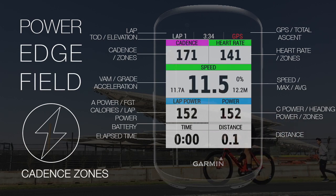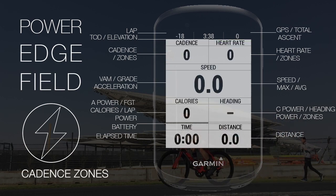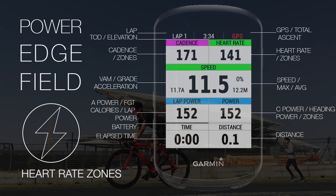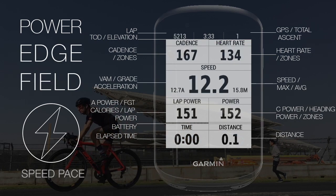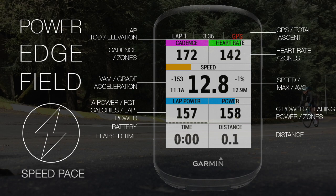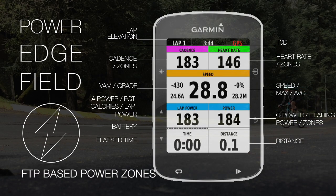Cadence uses zones based on professional standards. Heart rate uses zones based on your profile. Speed uses color zones for maintaining the pace. Power uses zones based on the anti-carbon or Coggan model with your FTP.